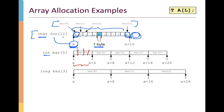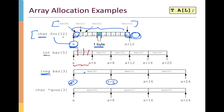For a long, it's similar except now we have 8 bytes per element, so the size of long is 8. baz[0] goes from the beginning of the array to just before x plus 8, where the second element starts. For a character pointer array, these are also 8 bytes wide, so quucks[0] starts at the beginning, quucks[1] starts at x plus 8, quucks[2] at x plus 16, and so forth.